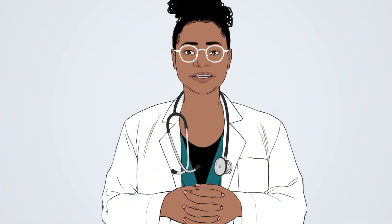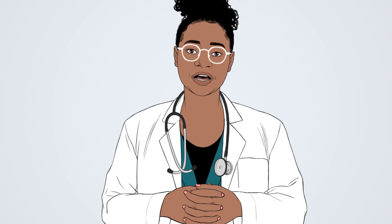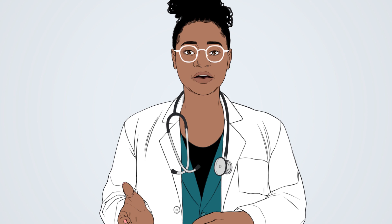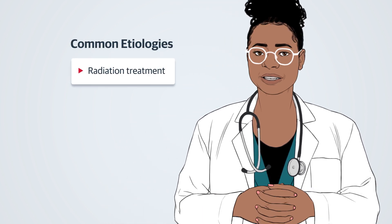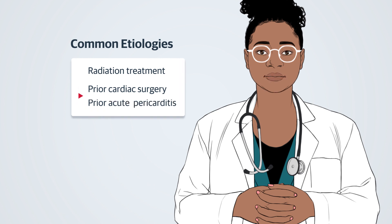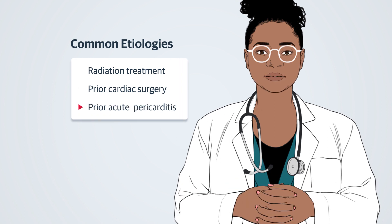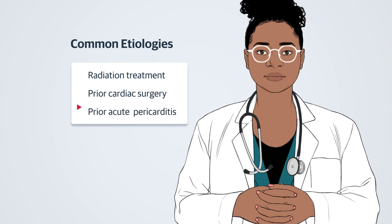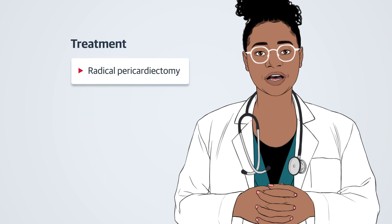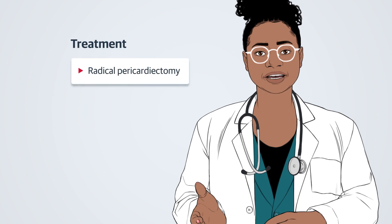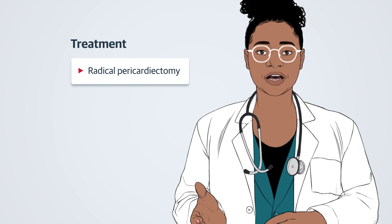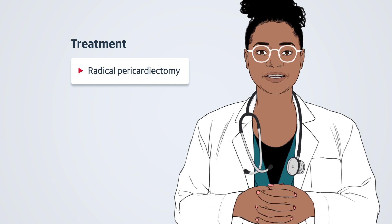Constrictive pericarditis is a potentially curable etiology of heart failure. It's caused by inelasticity of the pericardium, resulting in restraint of ventricular filling. In the developed world, the most common etiologies are radiation treatment, prior cardiac surgery, and prior acute pericarditis; many cases are idiopathic. Treatment is surgical, with radical pericardiectomy resecting the entire parietal and visceral pericardium from phrenic nerve to phrenic nerve.